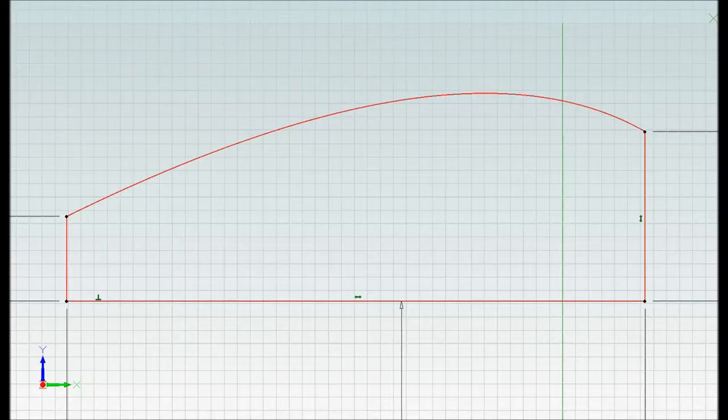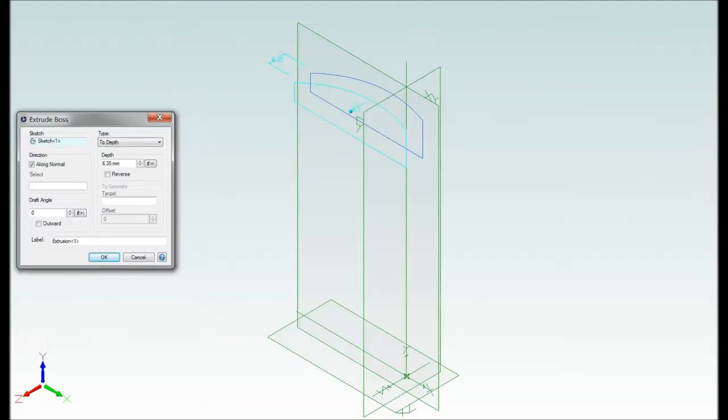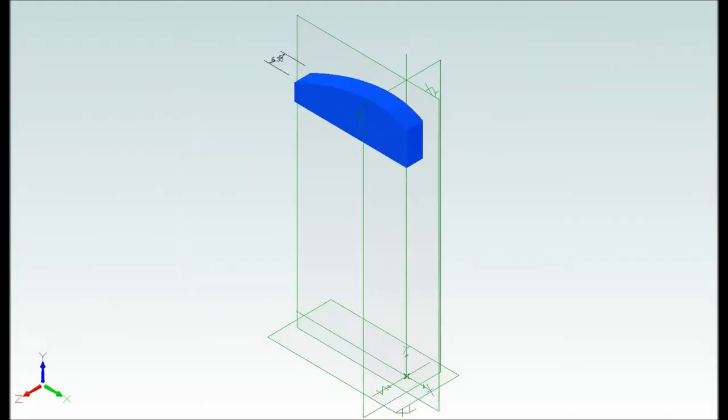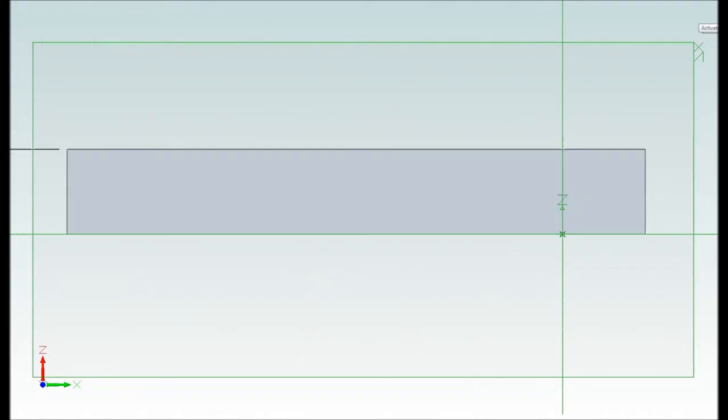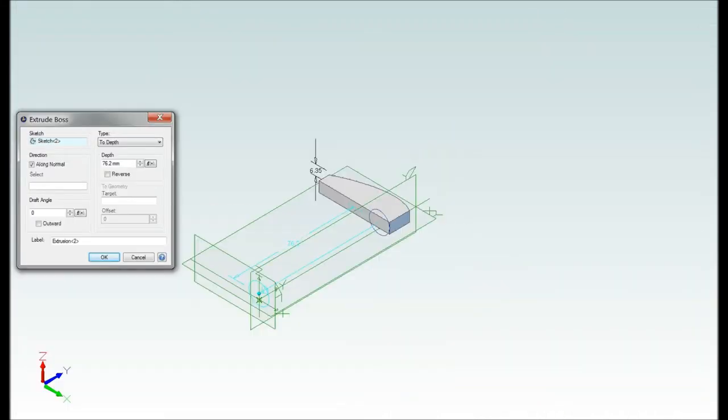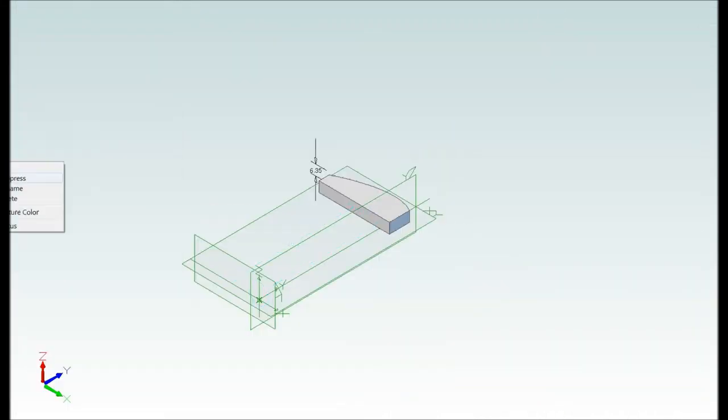For the top piece, the top part is created first using a sketch and the extrude function. Then, a cylindrical shaft is created for the part that inserts into the slot in the handle.